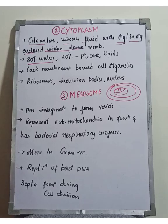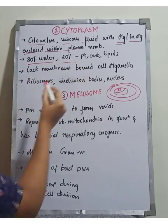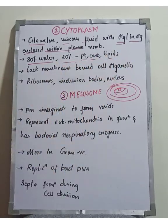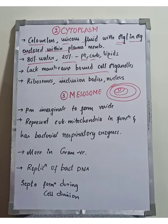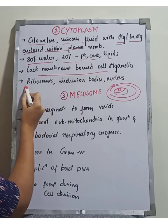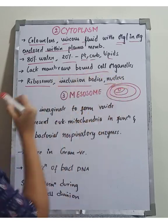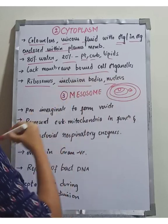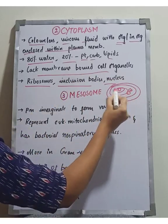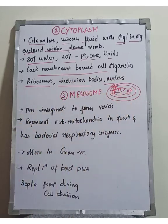Cytoplasm contains about 80% water, and the remaining 20% consists of proteins, carbohydrates, and lipids. It contains membrane-bounded cell organelles. It also contains ribosomes, inclusion bodies, and other structures.